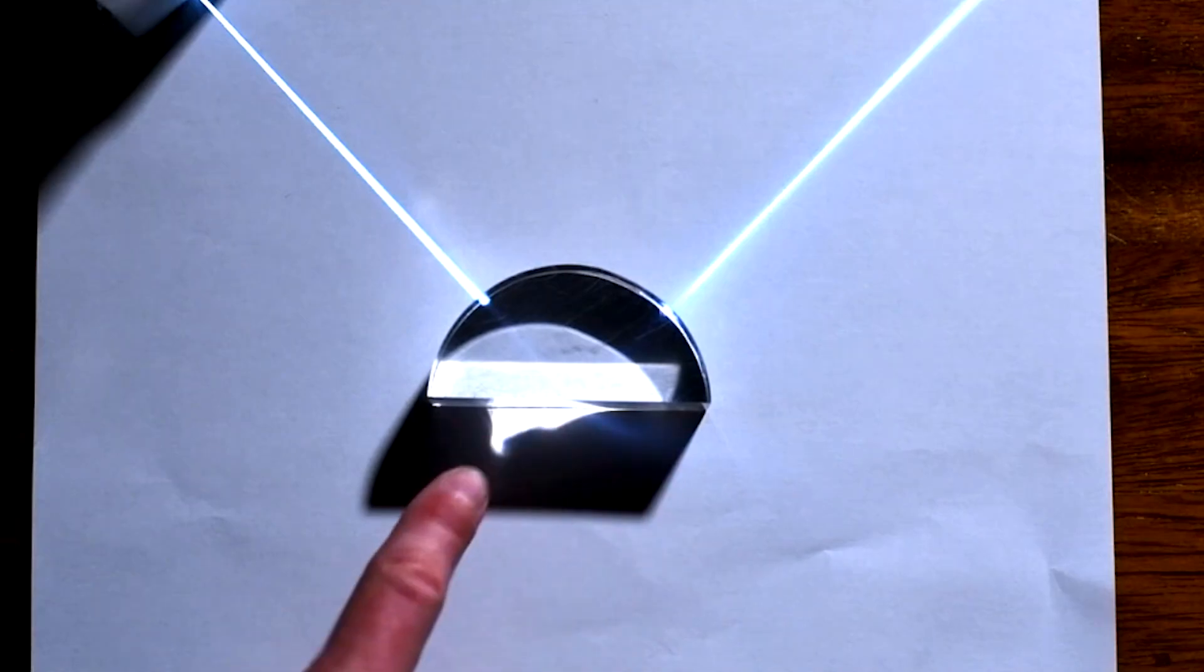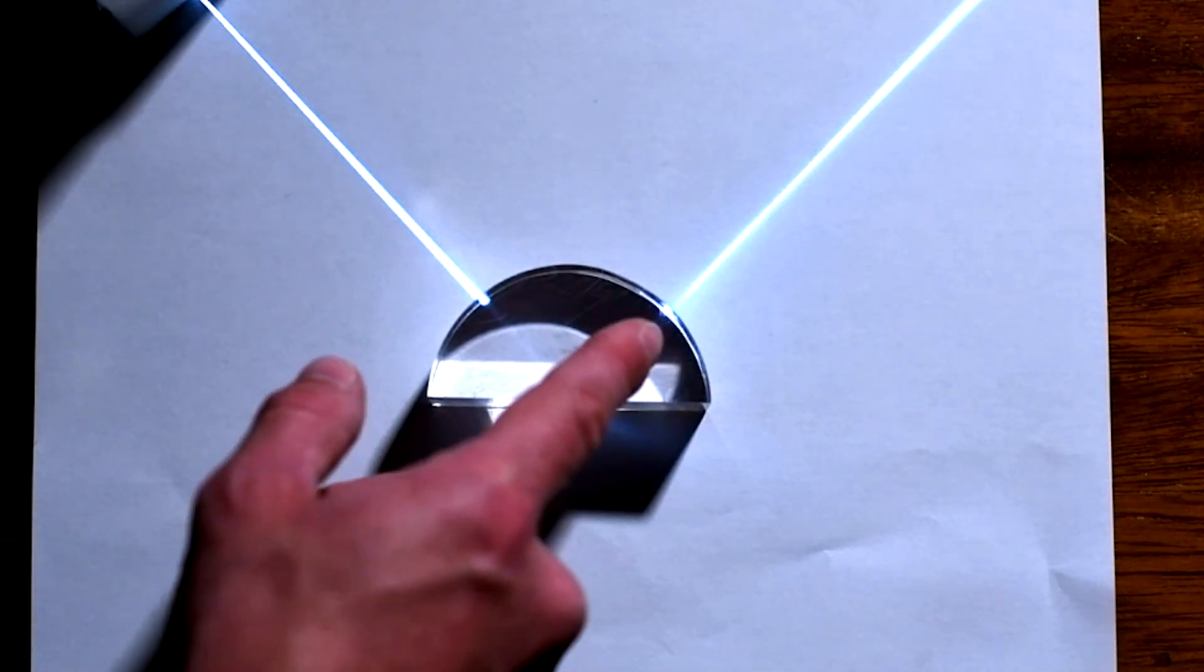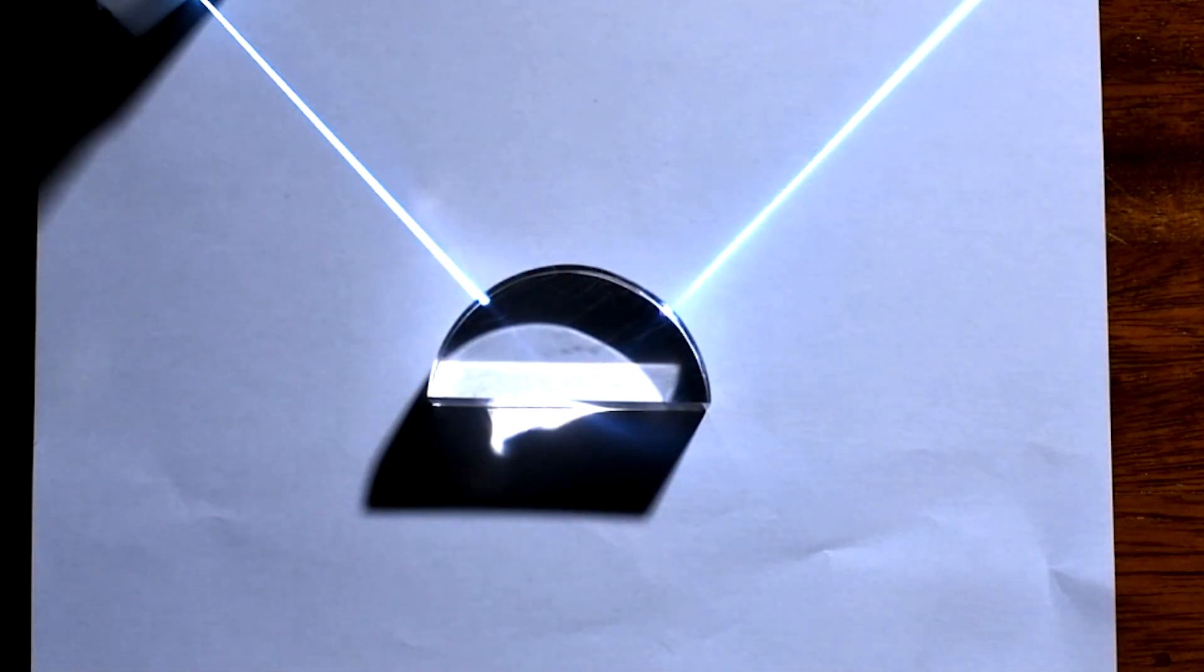There's not a mirror here. Again, it's just glass. But the angle of incidence is now so big that we only have light being reflected on the surface, not being refracted. We have now achieved total internal reflection, or TIR for short.